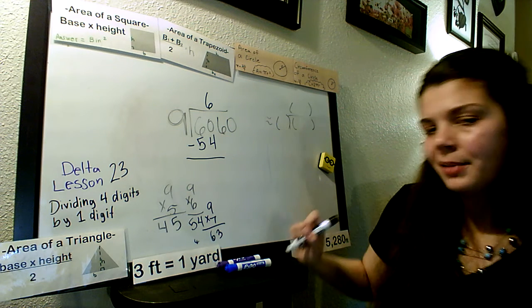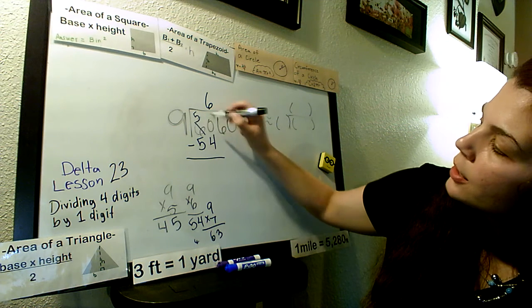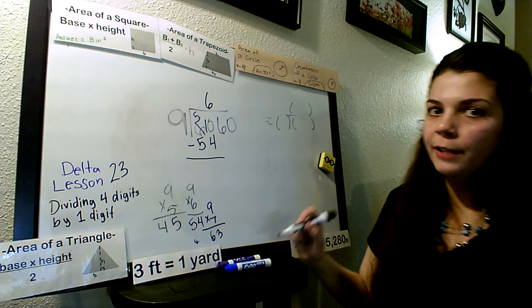Alright. Can we subtract 4 from 0? No. We have to borrow from the neighbor. He turns into a 5. He turns into a 10. 10 minus 4.